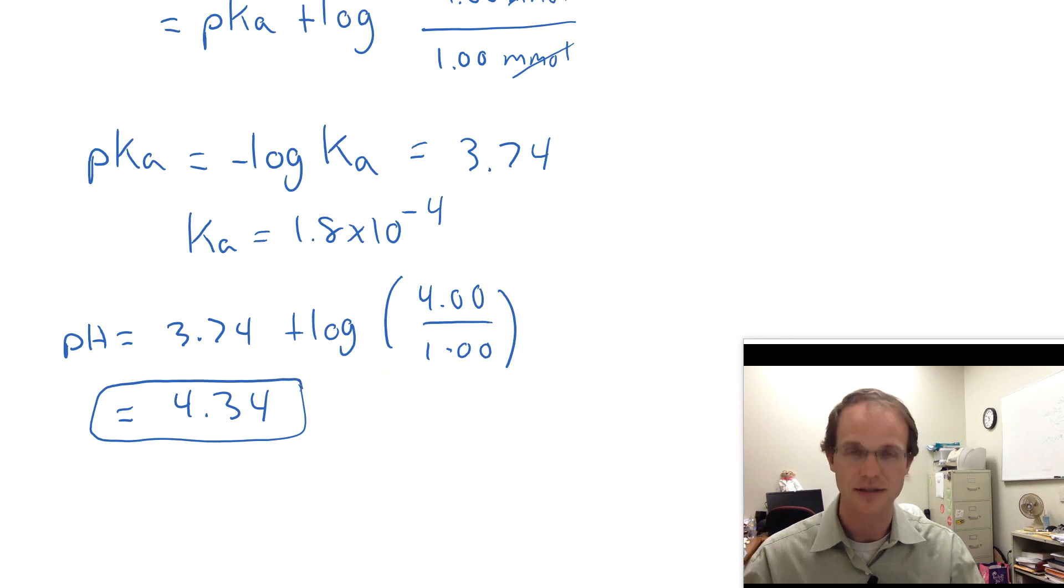And that is the pH of a 0.2 molar formic acid solution, 25 milliliters, after you've titrated with 10 milliliters of sodium hydroxide. I hope that video has been helpful for you figuring out these titration problems. We'll look forward in the next videos to doing one at the equivalence point and one after the equivalence point. Thanks.